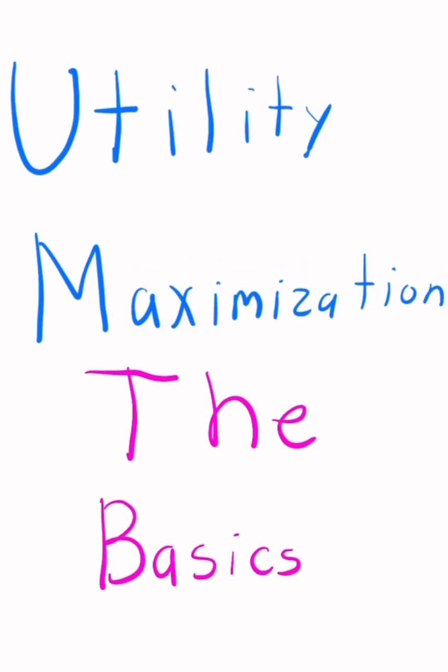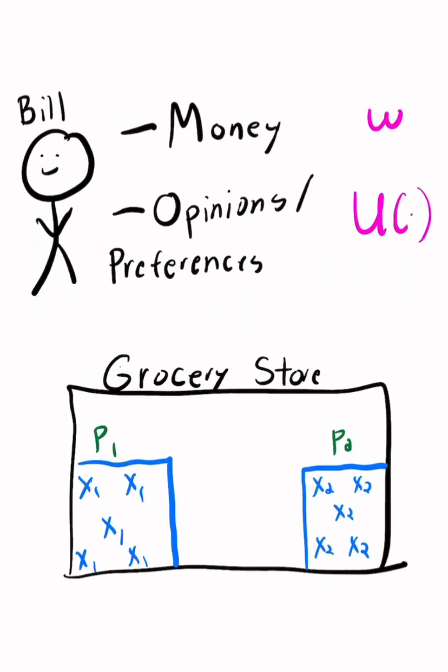Here's the basic idea behind utility maximization in 60 seconds. This is Bill. Bill has two things. He has money W and he's got a utility function U.